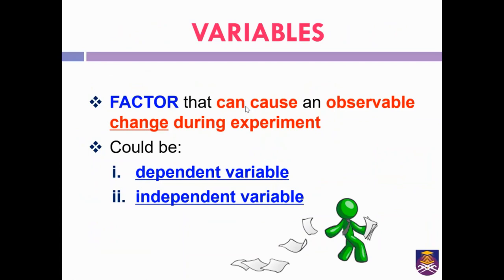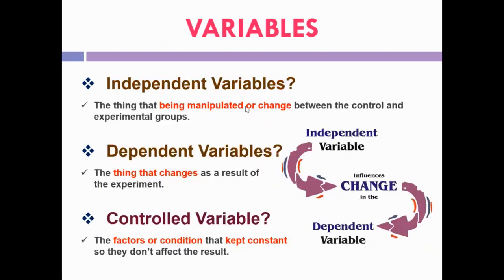Variables are the factors that can cause an observable change during an experiment. There are three types: independent variables, dependent variables, and controlled variables. Controlled variables are factors or conditions kept constant throughout the experiment. The independent variable is the factor being manipulated or changed between the control and experimental groups. The dependent variable is the factor that changes as a result of the experiment — for example, plant growth changes based on the independent variable, water.